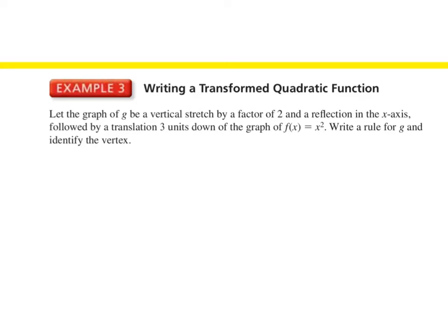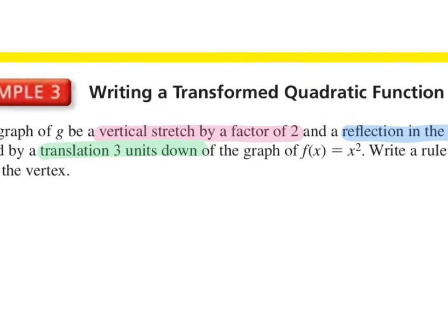So we have three things happening here: a vertical stretch by a factor of 2, a reflection in the x-axis, and a translation 3 units down. When we have a vertical stretch by a factor of 2, what do we need to do to our function? We multiply by 2 on the outside.